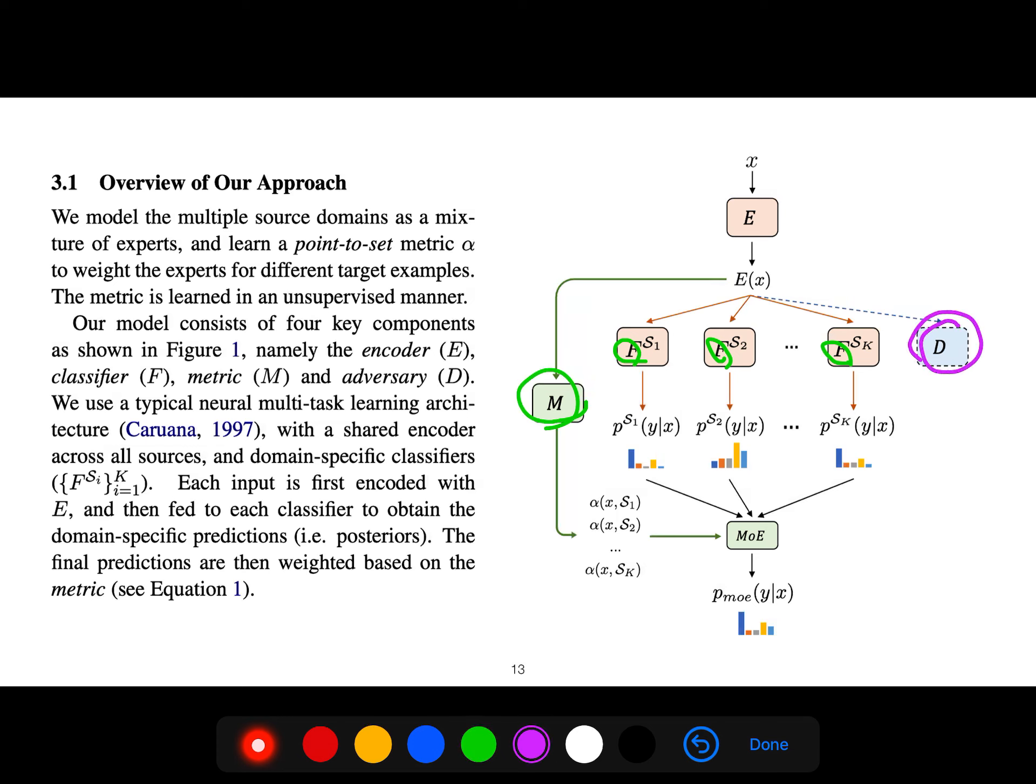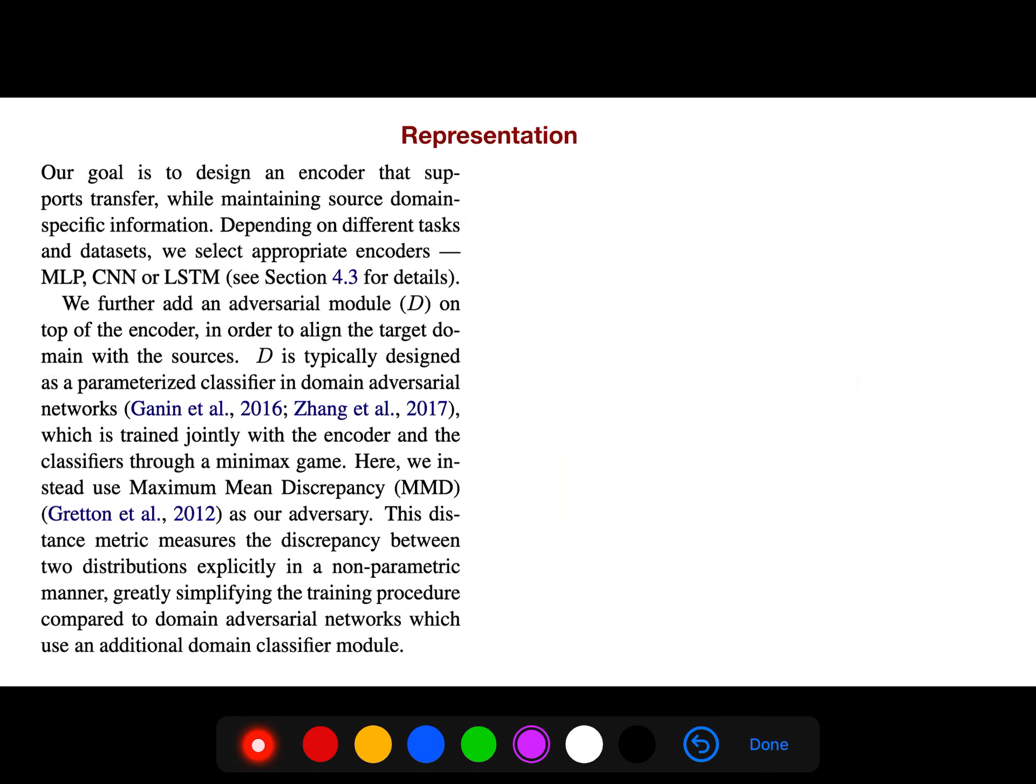We use a typical neural multi-task learning architecture with a shared encoder - this is our shared encoder. Our goal is to design an encoder that supports transfer while maintaining source domain-specific information. Depending on different tasks and datasets, we select the appropriate encoders - it could be LSTM, it could be CNN, it could be multi-layer perceptron.